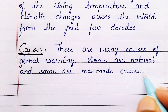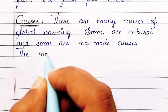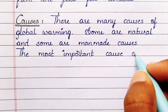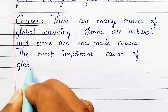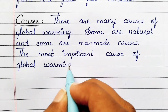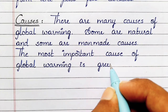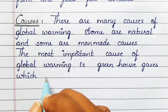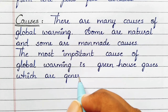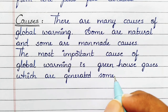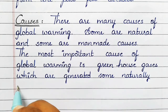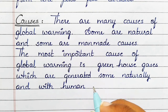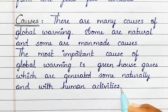There are many causes of global warming — some are natural and some are manmade. The most important cause of global warming is greenhouse gases, which are generated naturally and through human activities.